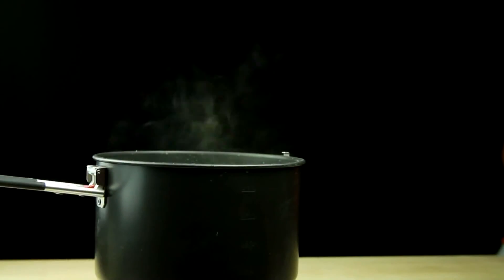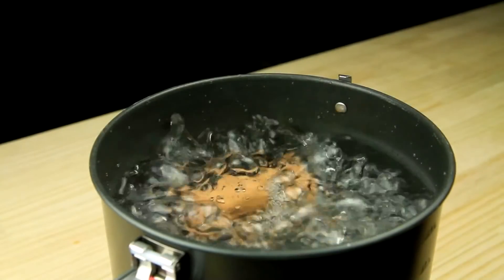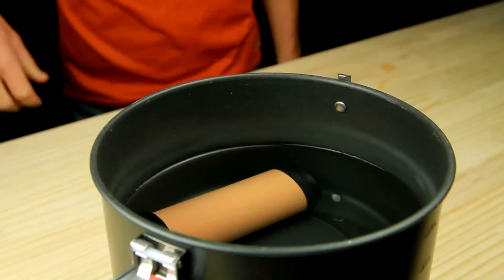Bring the water to a boil and maintain the boil for 5 minutes. Turn off the stove and allow the water to cool down before removing the ceramic element.